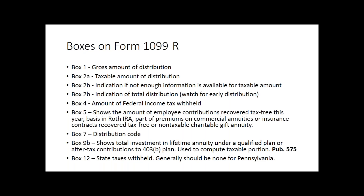Traditionally, every 1099-R will have an amount in box one. In most cases, we will see something in box 2A, which indicates the taxable amount of distribution. If the third-party administrator preparing the 1099-R knows that it's an entirely taxable distribution, the same amount will be in box 2A as in box one. If you get a 1099-R and it does not have anything in 2A, we'll go through a couple of scenarios to determine the taxability amount. In most cases, it's probably going to be the same amount as box one.